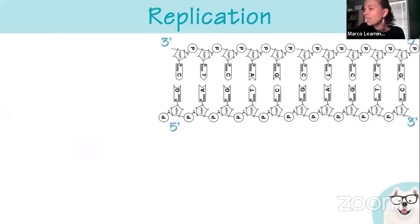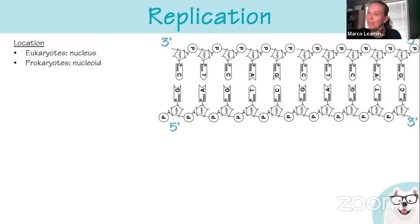For replication: in a eukaryote it takes place in the nucleus; in a prokaryote it takes place in the nucleoid region. Prokaryotes don't have a membrane-bound nucleus — just a nucleoid region where their DNA is housed. Eukaryotes have multiple linear strands of DNA. Prokaryotes have a single circular piece of DNA.